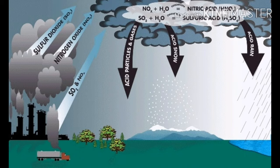Combustion of fossil fuels also increases the amount of suspended particles in the air. These suspended particles could be unburnt carbon particles or substances called hydrocarbons. When we burn fossil fuels, these suspended particles — like carbon particles, which we call hydrocarbons — are also released in the air.